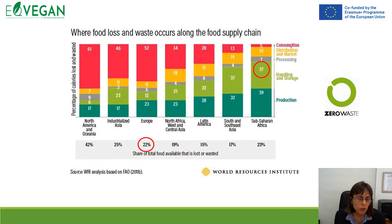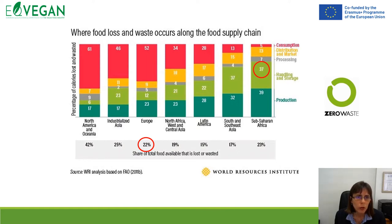In the food supply chain — from raw production through processing, packaging, and to consumer usage — there is a lot of food loss and waste that occurs. In Europe, 22% of total food available is lost or wasted, and there are different types of food loss and waste across the food production chain: from production, handling, storage, processing, distribution and market, and consumption.